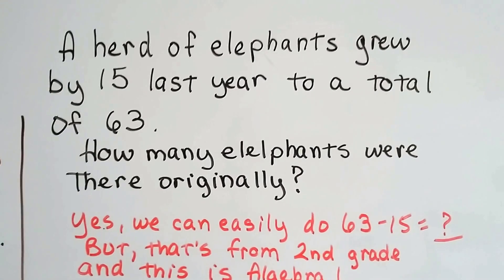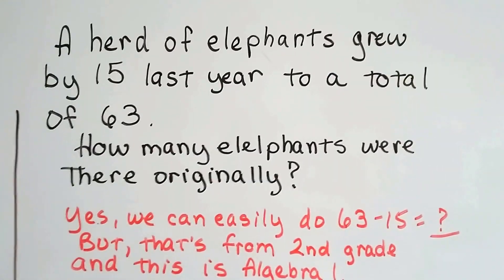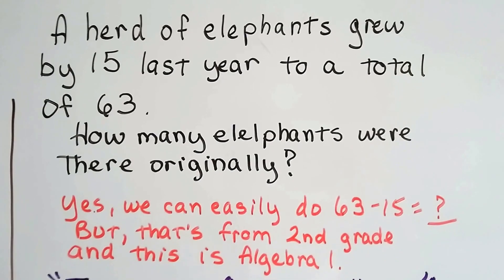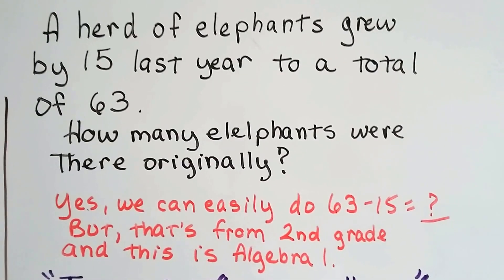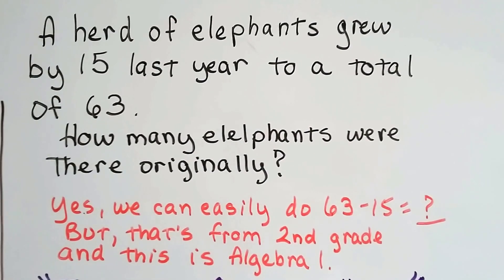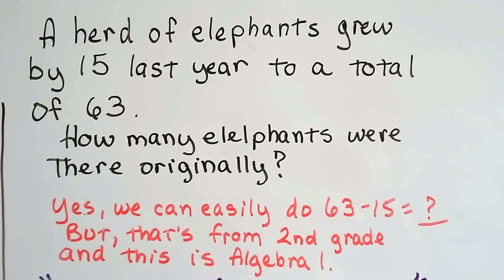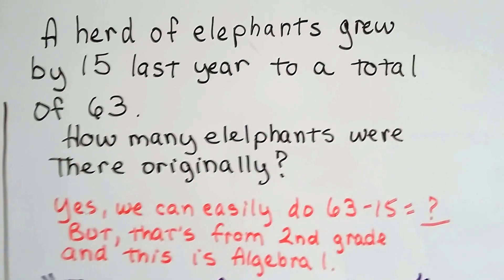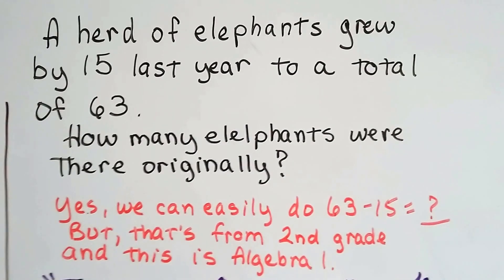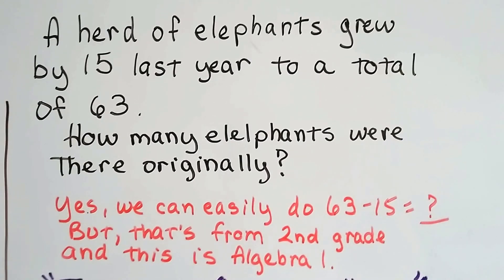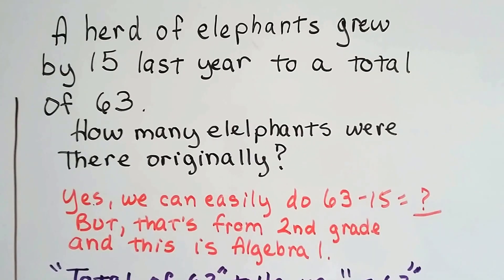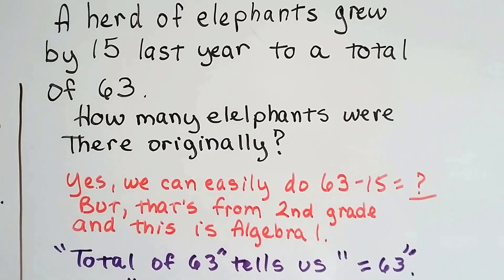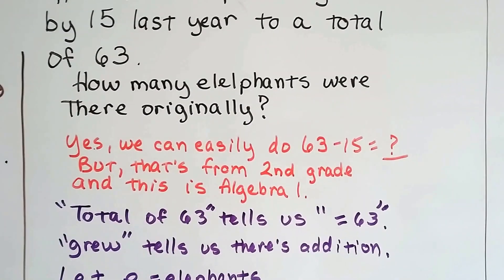So let's see what we've got here. A herd of elephants grew by 15 last year to a total of 63. How many elephants were there originally? Now, I know this looks like second grade math. We can just do 63 take away 15. But this is algebra 1 and we're trying to learn additive inverses. So what we do is we take a very simple problem that we know you can solve so that you can use the additive inverse and be able to use it for harder problems in the future.